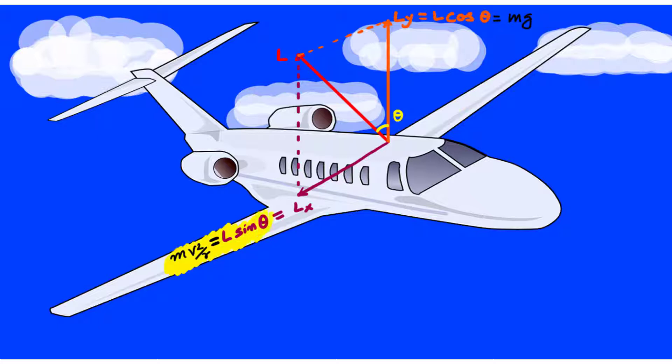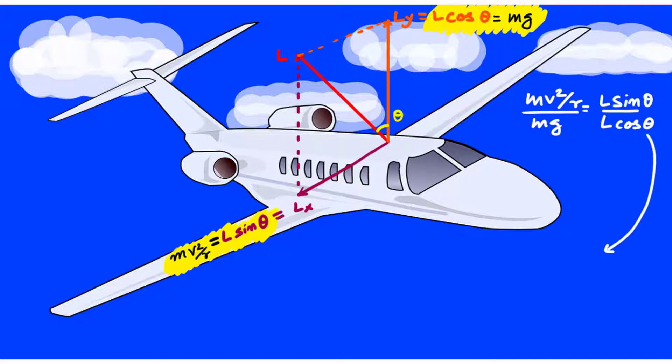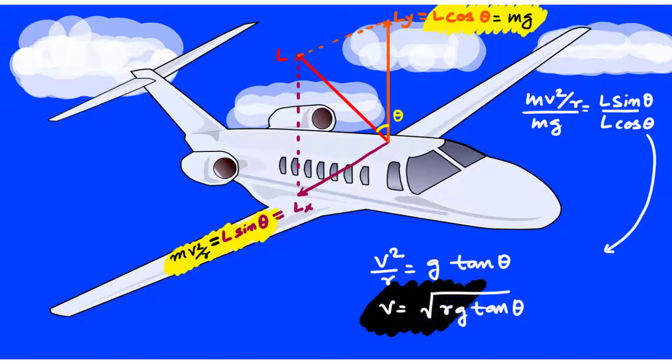So again from these equations, we can easily calculate the value of the required velocity of the aircraft to make turns. And here we have something what we got in the frictionless banking.